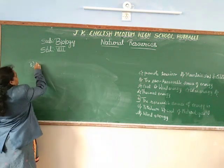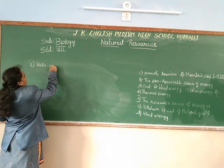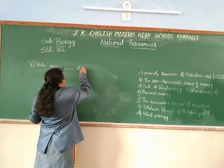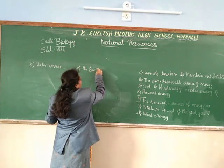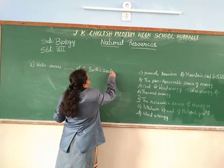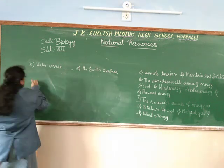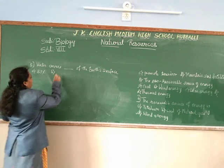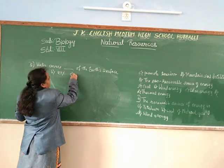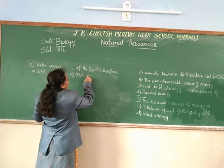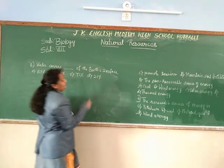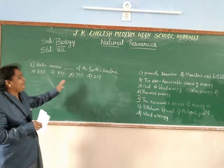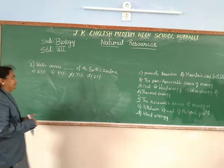Question 5: Water covers dash of the earth's surface. Options are: A) 87%, B) 97%, C) 71%, D) 21%. Water covers 71% of the earth's surface, so 71% is the correct answer.